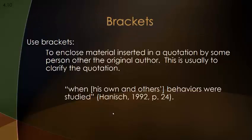The use of brackets: here's an example — 'When [his own and others'] behaviors were studied (Hanish, 1992, p. 24).' We quote Hanish 1992 as our citation and include the page number because we have a direct quote. What we do with brackets is identify exactly whose behaviors were studied. 'His own and others' did not appear in the original quote, but we want to give that clarifying information — so we put it in brackets so the reader will understand whose behaviors we're talking about.